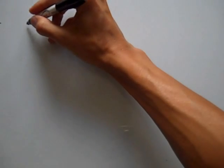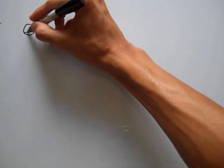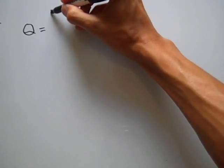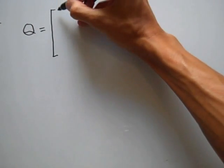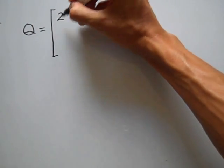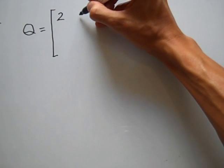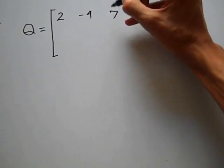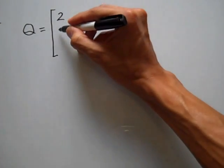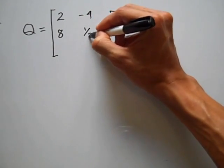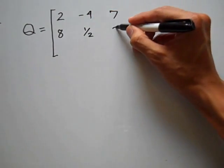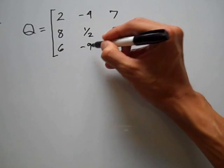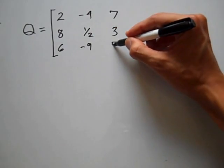Suppose I have a matrix Q that contains the following elements. It's a 3 by 3 matrix that will contain a 2, negative 4, 7, 8, 1 half, 3, 6, negative 9, and 5.